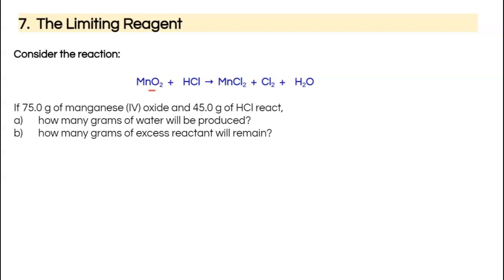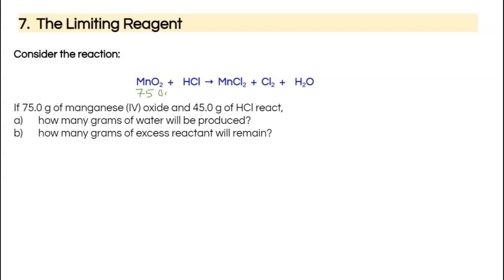Here is the reaction. The question says: if I react 75 grams of manganese dioxide and 45 grams of HCl (hydrogen chloride), how many grams of water will be produced and how many grams of excess reagent will remain? They're giving us two reactant quantities — 75 grams of manganese dioxide and 45 grams of HCl.